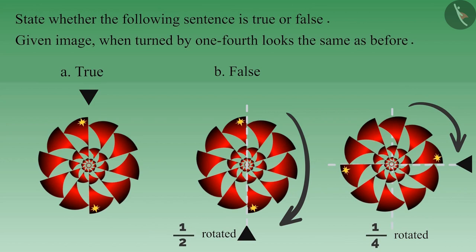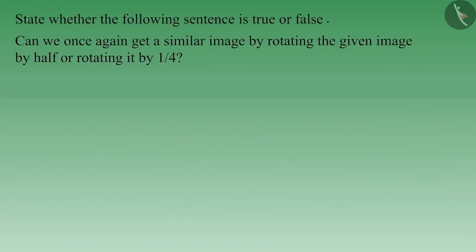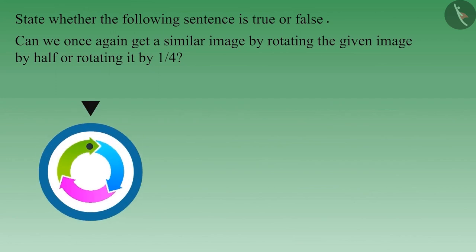Take a closer look. When rotated by half it looks the same, but it does not look the same when rotated by one-fourth. Therefore, it is not necessary that if an image looks like its original self when rotated by half, it would also look the same when rotated by a quarter. Therefore, this statement is false.